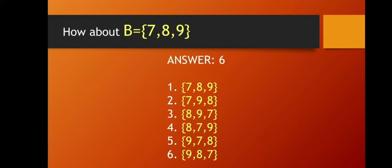Let's take another example. Set B = {7, 8, 9}. Our answer is 6 — we can make 6 permutations. Those 6 permutations are: (7,8,9), (7,9,8), (8,9,7), (8,7,9), (9,7,8), and (9,8,7). It's just like how we do probabilities — we just rearrange the numbers and count how many sets we can make with the 3 given numbers.